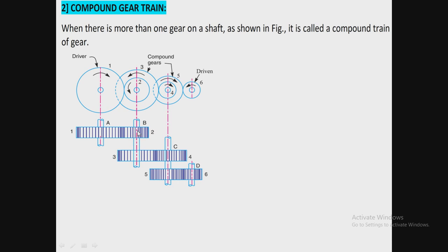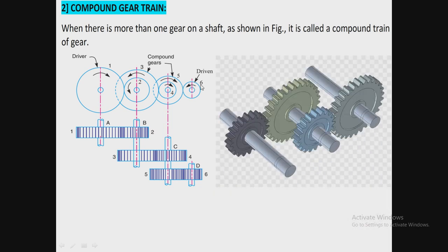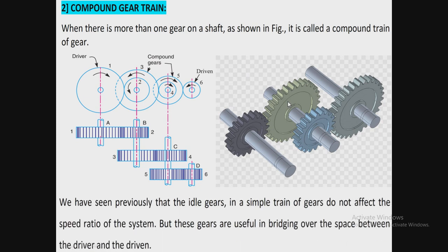On one single shaft there are two gears, and on shaft C there are also two gears — these two are the compound gears. The first one is the driver and the second one is the driven. As this 3D figure clarifies, the first shaft is the driver, the third shaft is the driven, and in between these two there is the compound gear with more than one gear on the shaft.